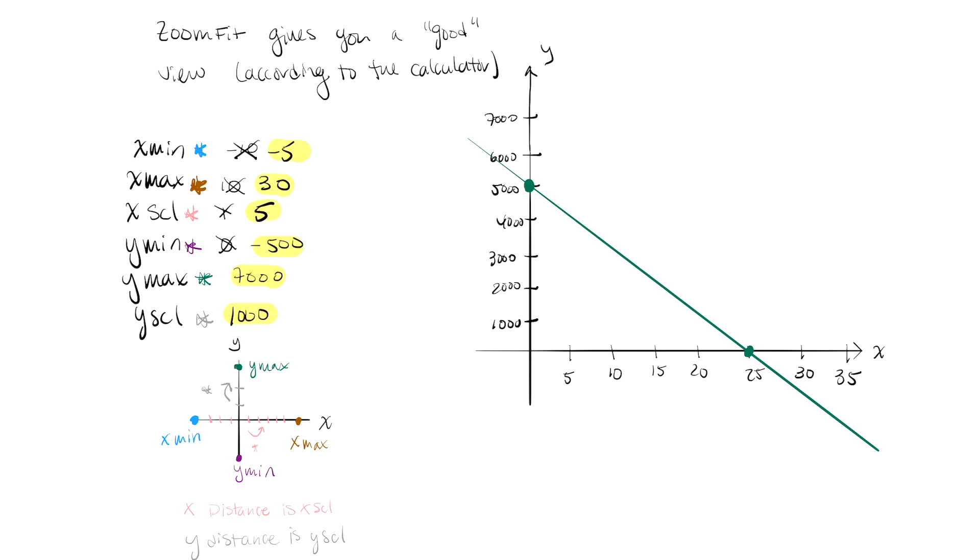So there is a good graph of y equals 5,000 minus 200x. We can clearly see the y-intercept. We can see the x-intercept. I can tell that the scale along the x-axis is moving by 5. I can tell that the scale along the y-axis is moving by 1,000. And this kind of graph would get you full credit. So if you ever see a problem that says clearly label and scale your axes, here I have my labels, and my labels show a scale.